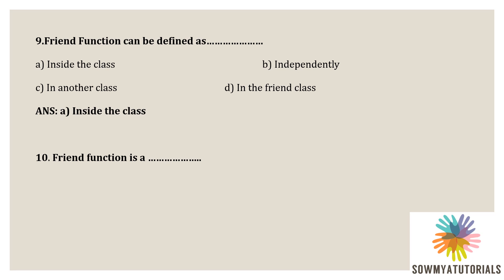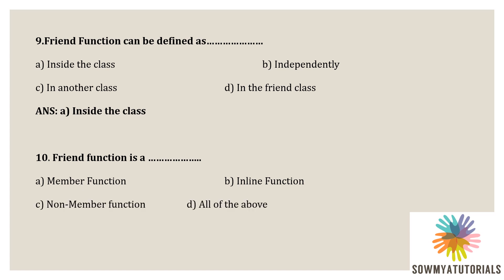Next question: friend function is a? Options are: A) member function, B) inline function, C) non-member function, D) all of the above. A friend function is a non-member function that is a friend of a class. The friend function is declared within a class with the prefixed 'friend' keyword. So the correct answer is option C — non-member function.